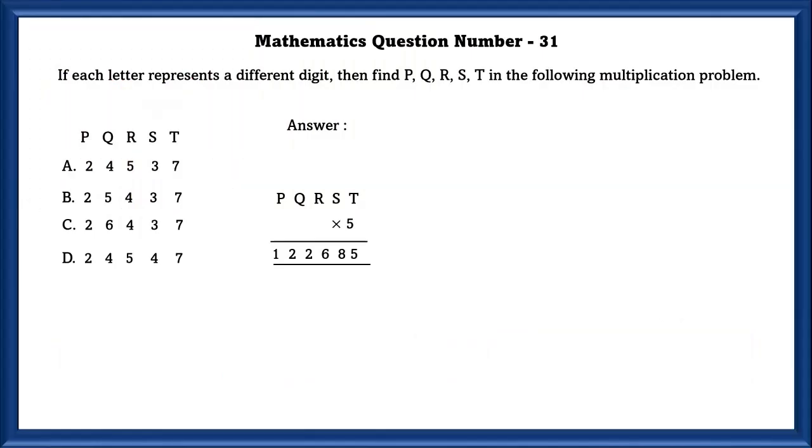Mathematics question number 31. If each letter represents a different digit, then find P, Q, R, S, T in the following multiplication problem. As we can see here in the options, T is equal to 7 because in all of the options T is 7. So let's proceed with 7.